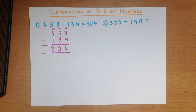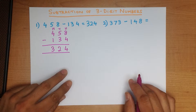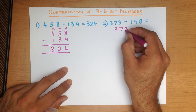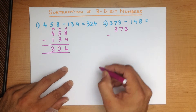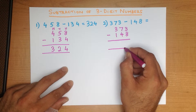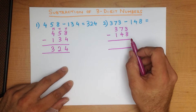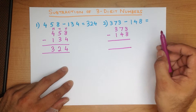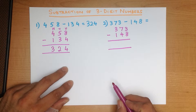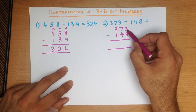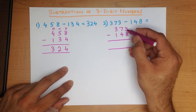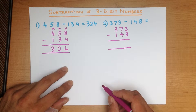373 minus 148. The first step — let's write the numbers down in the vertical format. So the first thing we do is we subtract the column on the right-hand side. What is 3 minus 8? Well, we can't do that because 3 is smaller than 8. So what do we do?